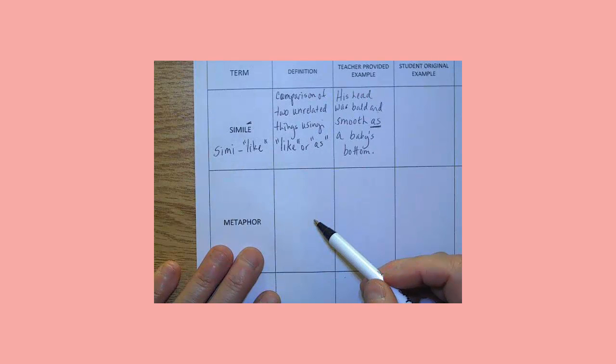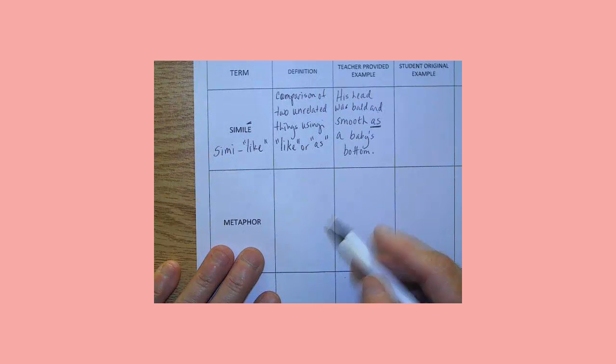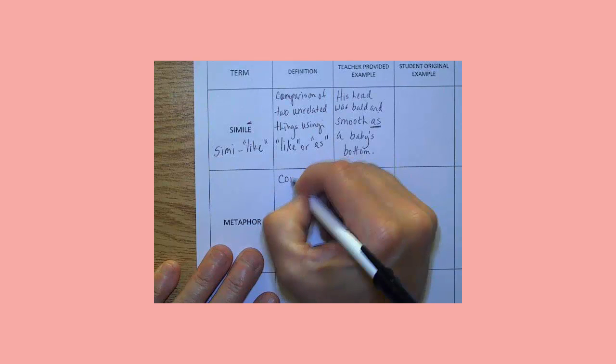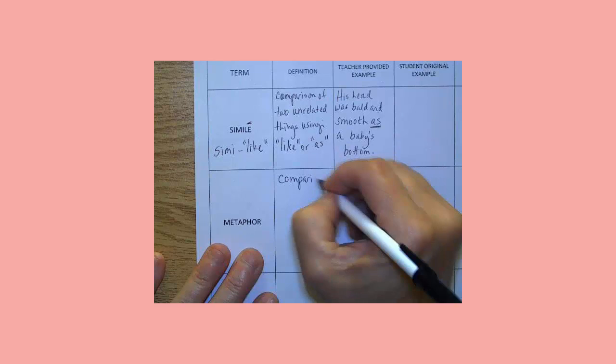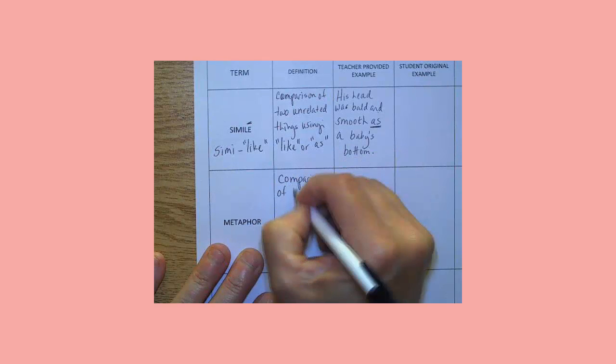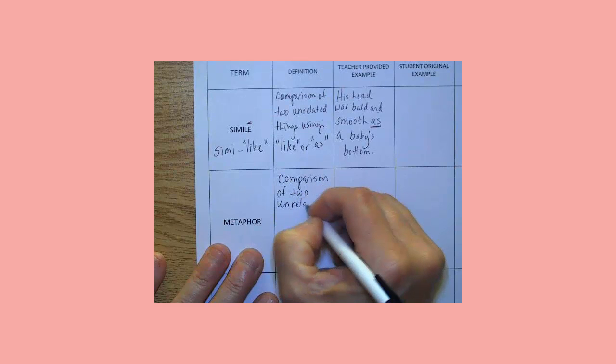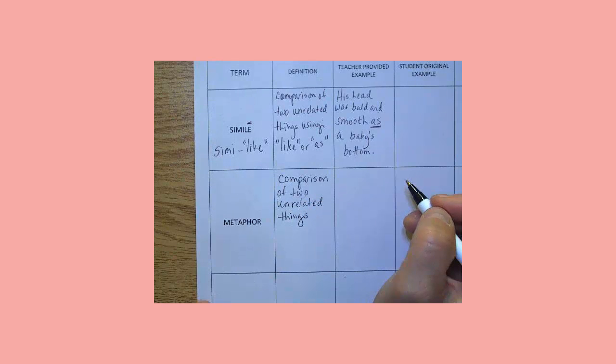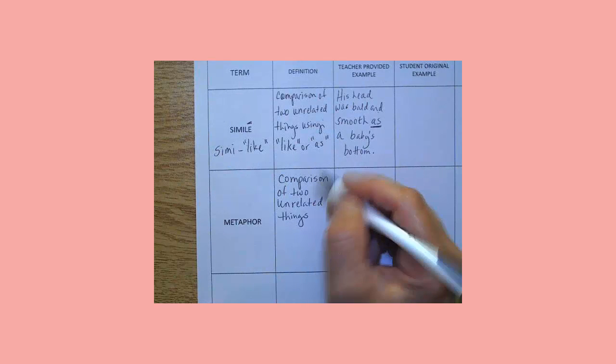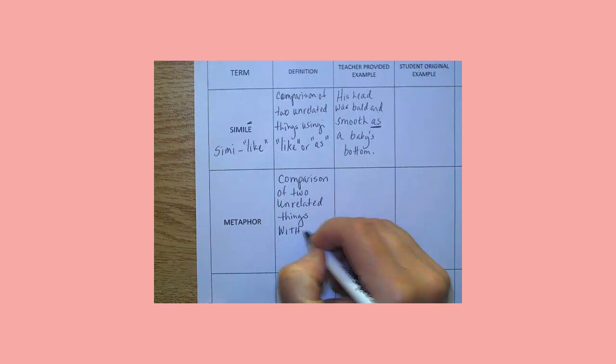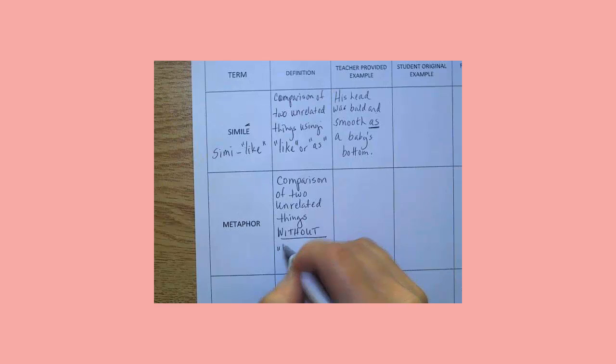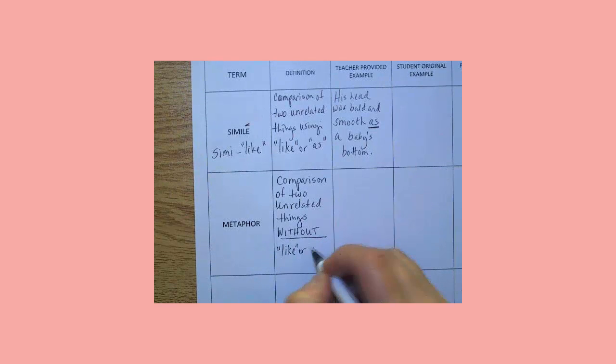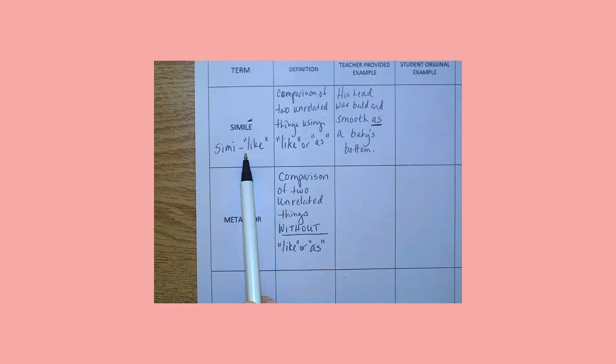Metaphor is a lot like a simile, but you don't use the word like or as. So a comparison of two unrelated things. Without. All capital letters and underlined. Without like or as. This is why I sometimes call a simile a simile-like. So that I remember which one can have like or as in it.